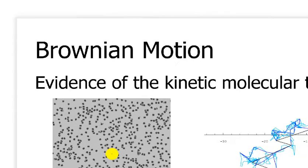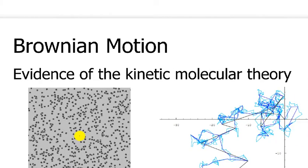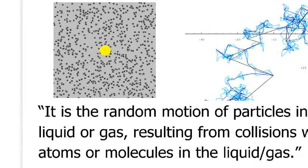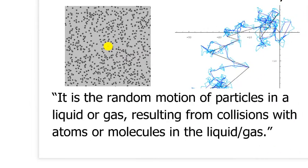So here's what's up with Brownian Motion. I've got the subtitle there: evidence of the kinetic molecular theory, which we talked about in the last video. So, what is it? Well, let's go to the definition here. It's the random motion of particles in a liquid or gas which result from collisions with atoms or molecules that are in the liquid or gas.